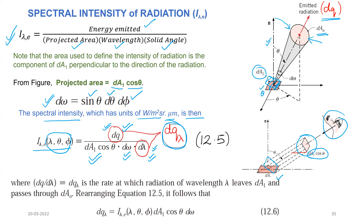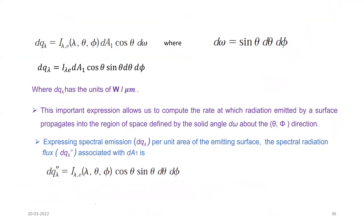When we divide dq by d_lambda, we call this quantity dq_lambda. dq_lambda is the rate at which radiation of wavelength lambda leaves dA1 and passes through dAn. Rearranging: dq_lambda equals i_lambda_e multiplied by dA1·cos(θ) multiplied by d_omega. Substituting d_omega = sin(θ)dθdφ, dq_lambda becomes i_lambda_e times dA1·cos(θ) times sin(θ)dθdφ.